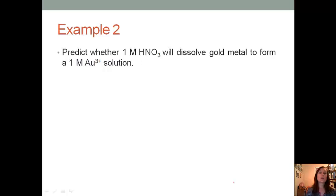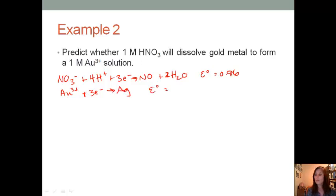Let's look at another one. We want to predict whether 1 molar nitric acid will dissolve gold metal to form 1 molar of gold ions. The first thing we need to do is find the two half reactions. For the nitric acid, I found one involving the NO₃ ion, because that's what's going to happen with that acid. That one is NO₃⁻ plus four hydrogen ions plus three electrons going to nitrogen monoxide and two water molecules. The potential for that half reaction is 0.96 volts. For the gold, I also found a half reaction for it. Remember, these are both in terms of reduction currently. That goes to solid gold, and the potential for that half reaction is positive 1.5 volts.